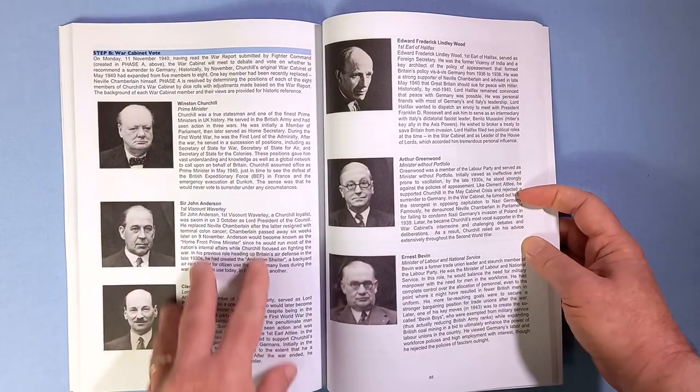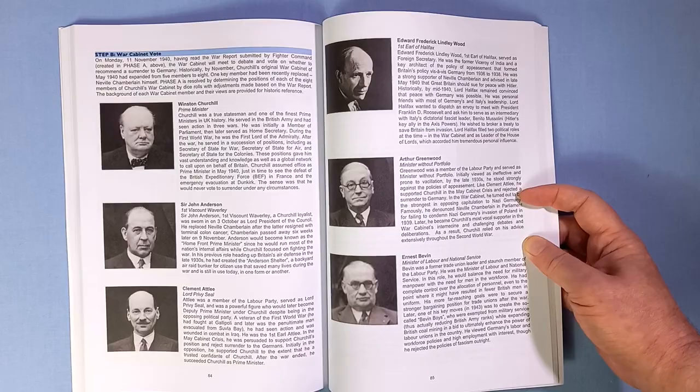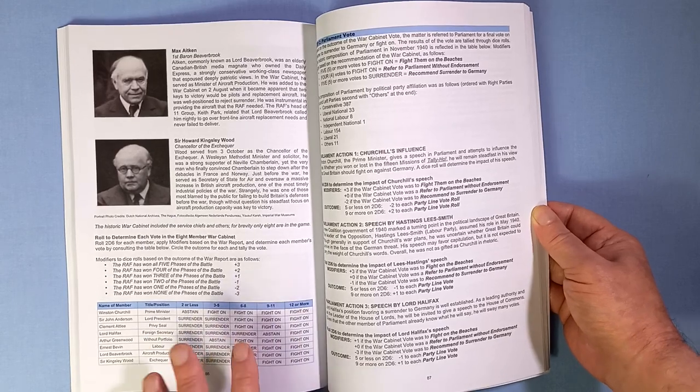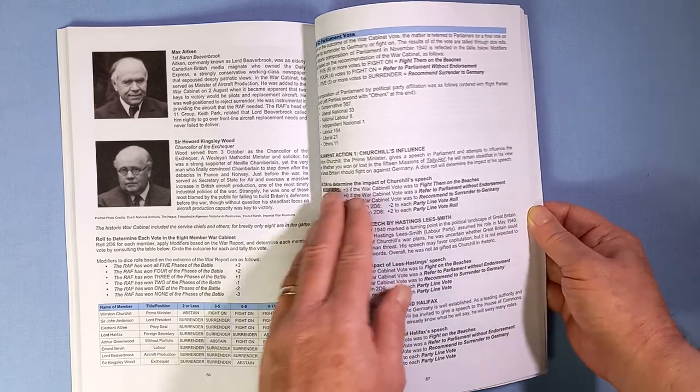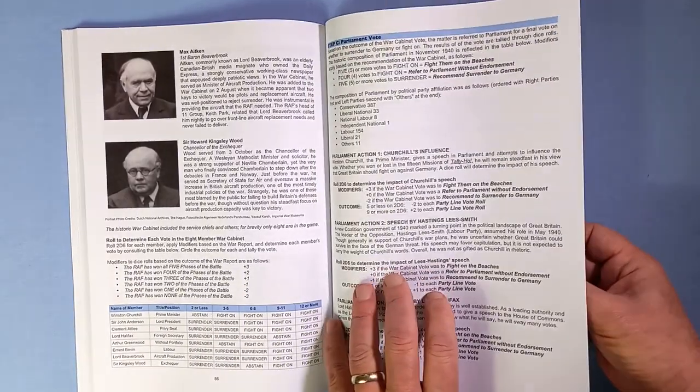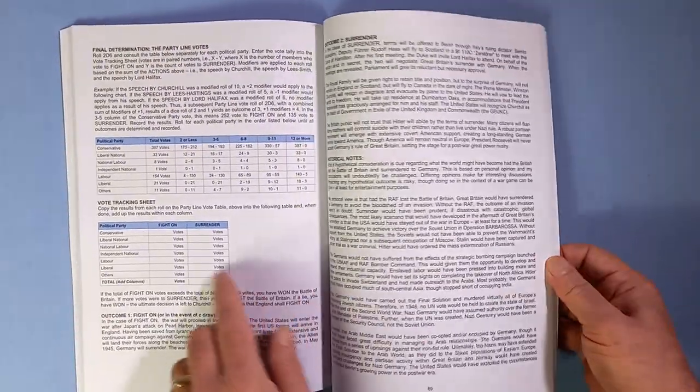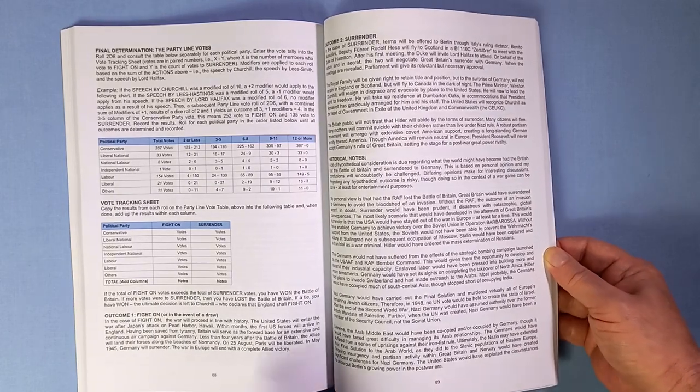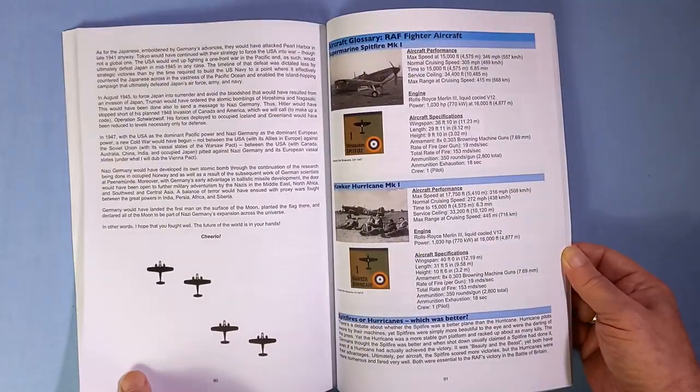And then the second step of the campaign is these guys are reading your war report. And then there's dice rolls to see whether or not they tell you to fight on or abstain or surrender. And then step C is the parliamentary vote. And it's like the political parties voting, and depending on the outcome you're going to fight on or surrender. So a lot going on.